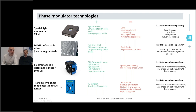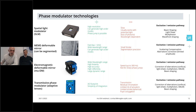Transmissive phase modulators, more recently called adaptive lenses, are very interesting because they can be integrated directly on the optical path without any mirror reflection, saving space. However, they are still being developed and improved, and currently have some limitations such as limited transmission levels and chromatism due to the type of material used.